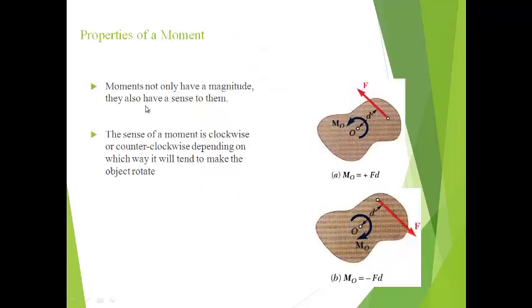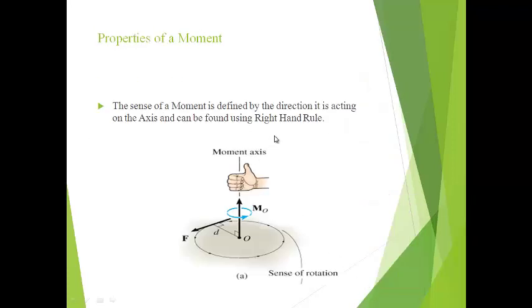Properties of a moment: Moments not only have a magnitude, they also have a sense. The sense of a moment is clockwise or counterclockwise depending on which way it tends to make the object rotate. If we rotate the body in an anticlockwise direction by applying external forces, the moment is calculated as positive. If we tend to rotate the body in a clockwise direction, the moment is calculated as negative. The sense of a moment can be found using the right-hand rule. Moment in anticlockwise direction about point O equals F into the perpendicular distance from O to the line of action of the force.